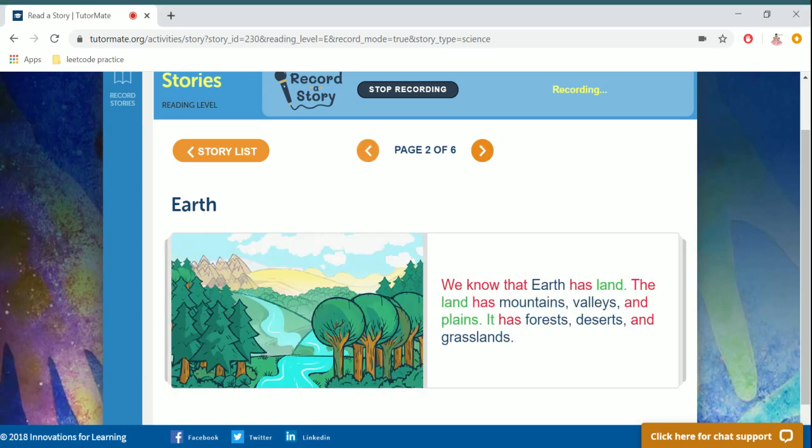We know the Earth has land. The land has mountains, valleys, and plains. It has forests, deserts, and grasslands.